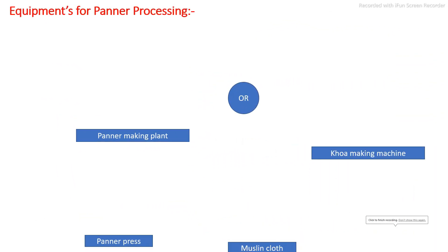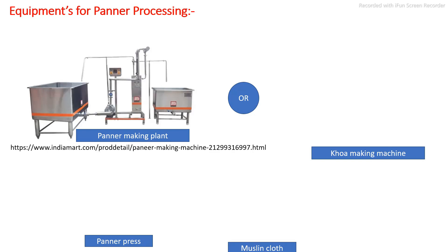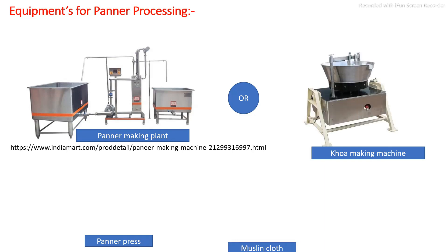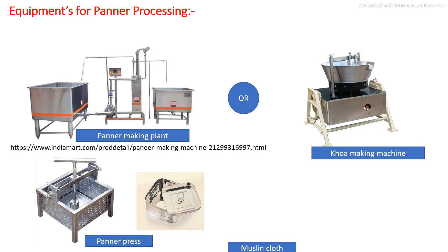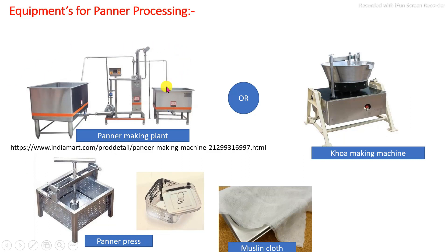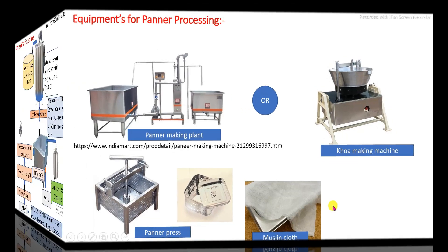Equipment required for the paneer production process: for small scale, a milk-making machine and a paneer press or a simple steam jacketed kettle is sufficient. For medium or large scale paneer production setup, the complete setup includes steam jacketed tanks with control fittings and pipeline systems. There are a number of paneer press models available. These two equipments — the milk-making machine and the paneer press — are sufficient for paneer production at small scale.